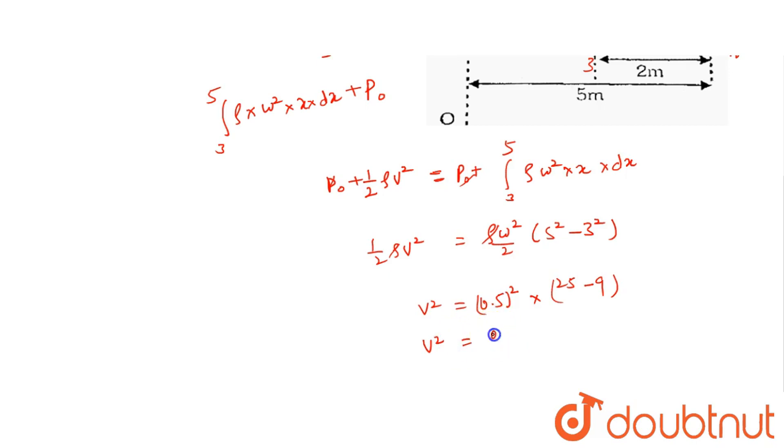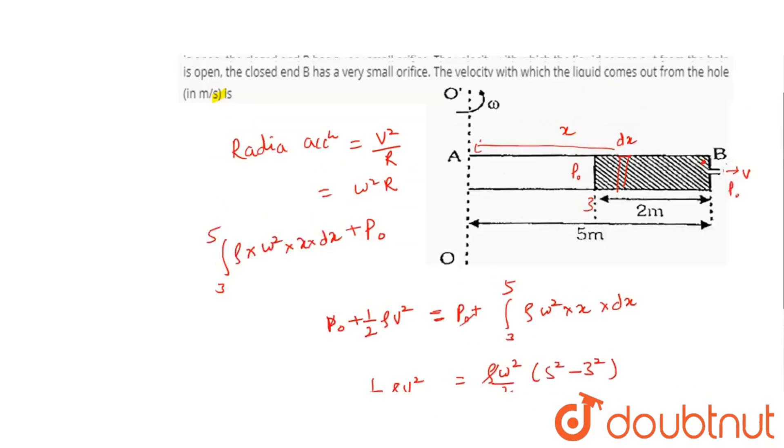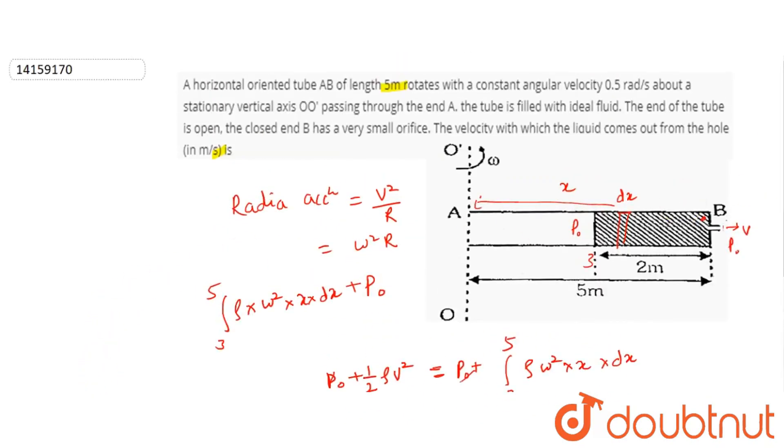So V square will be equals to 0.5 chi square into 16. So V is equals to 2 meter per second. So humara jo bhi velocity hoga, jo liquid yaha se flow karega, uska velocity kya hoga? 2 meter per second. This will be our final answer.